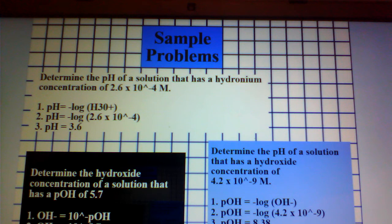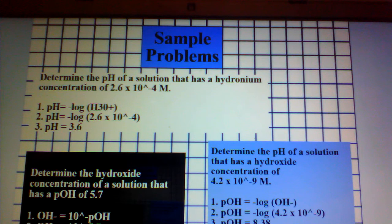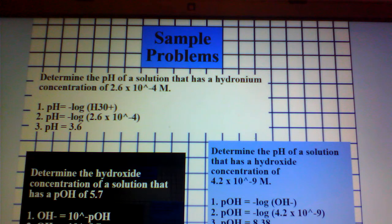Next, we can determine the hydroxide concentration of a solution that has a pOH of 5.7 by recalling that OH- is equal to 10 raised to the negative power of pOH. Plugging in our pOH value of 5.7, we have 10 raised to the power of negative 5.7, and calculate that OH- is equal to 2 times 10 raised to the power of negative 6.